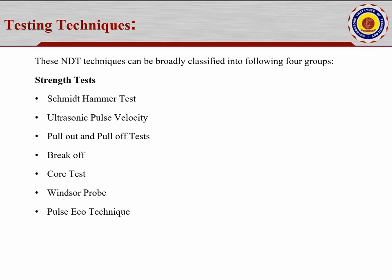Also under strength tests: pull-out and pull-off tests similar to tension tests, break-off and impact tests, core test — taking samples from the existing structure to test in the lab, Windsor probe — similar to a gun with a needle-like element inserted at the front; applying pressure causes the probe to penetrate to some depth, from which the strength of the structure can be calculated. The Windsor probe is also used as a rebar locator to monitor corrosion and identify the diameter or spacing of rods. Pulse echo technique is similar to the UPV test.